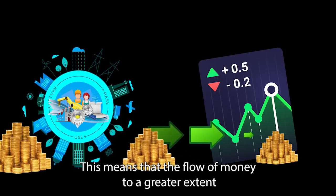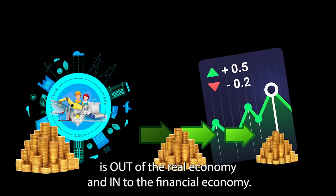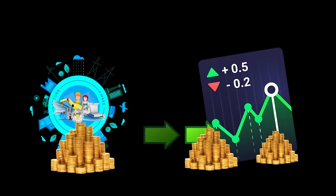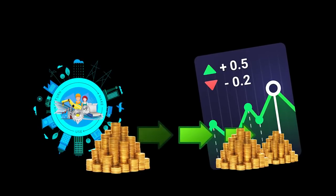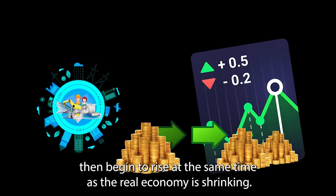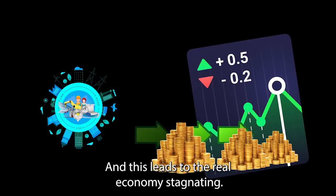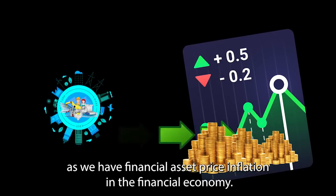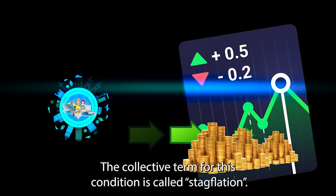The flow of money to a greater extent flows out of the real economy and into the financial economy, causing a deflation of the real economy. This large inflow of money into the financial economy leads to a rise in financial asset prices. The price of shares and other financial assets begins to rise at the same time as the real economy is shrinking. As the real economy shrinks, the public's ability to consume goods and services decreases, and this leads to the real economy stagnating. We then have a deflationary and stagnant real economy at the same time as we have financial asset price inflation in the financial economy. The collective term for this condition is called stagflation.